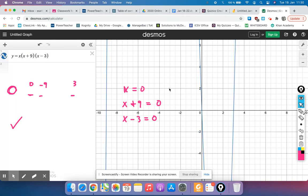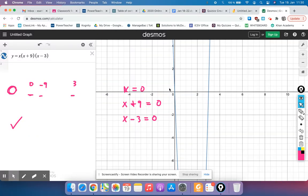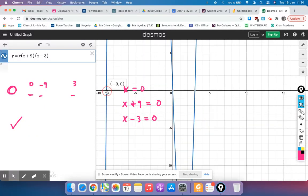See for yourself, if I zoom out a little bit, we can see these x-intercepts. There's the negative 9, there's 0, and there is positive 3.